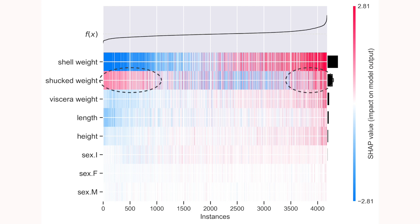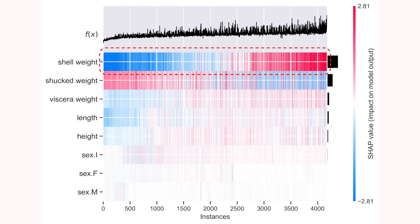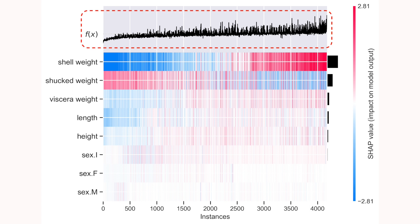See how there are two groups of positive SHAP values for shell weight. We could also order instances by the values of one of the features — here, we order them by the value of the first feature, shell weight. We can see that the SHAP values for this feature tend to increase with the feature value, and the model predictions also increase. In other words, the larger the shell weight value, the higher the predicted number of rings.